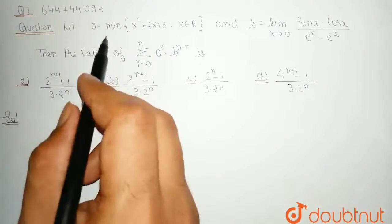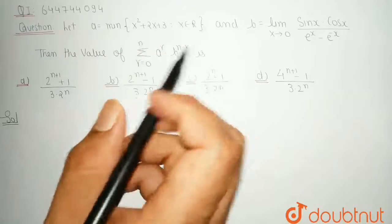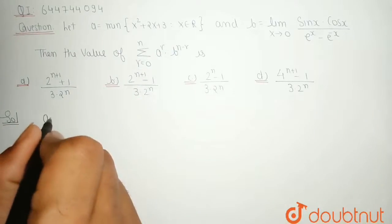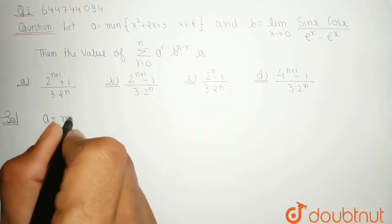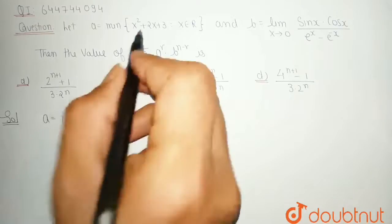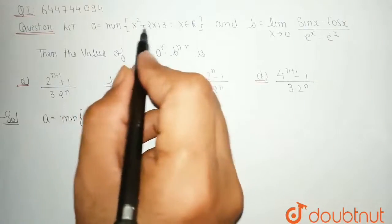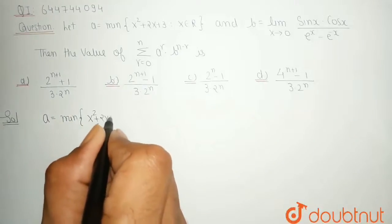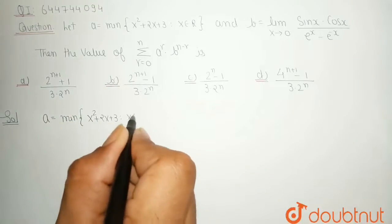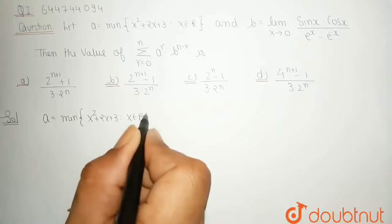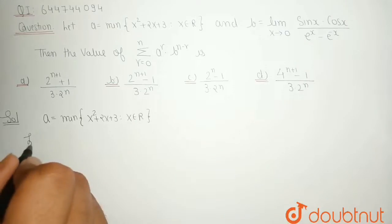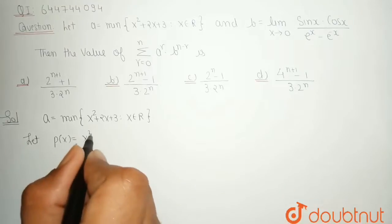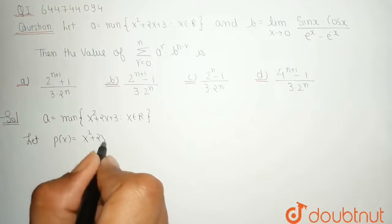First we determine the values of a and b. For the value of a, it is the minimum of the quadratic polynomial x² + 2x + 3 for x belonging to real numbers. Let us consider p(x) = x² + 2x + 3.